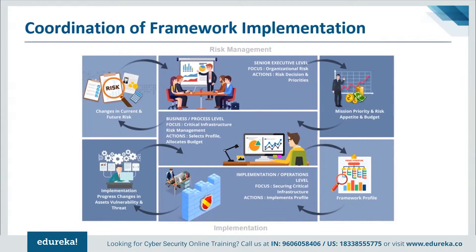The framework helps guide key decision points about risk management activities through the various levels of an organization. As shown in the diagram, it describes a common flow of information and decisions at three levels: executive, business process, and implementation or operations. The executive level communicates mission priorities, available resources, and overall risk tolerance to the business process level. The business or process level uses this input into the risk management process, collaborates with the implementation level to communicate business needs and create a profile. The implementation level communicates profile implementation progress back to the business level, which performs an impact assessment and reports outcomes to the executive level.